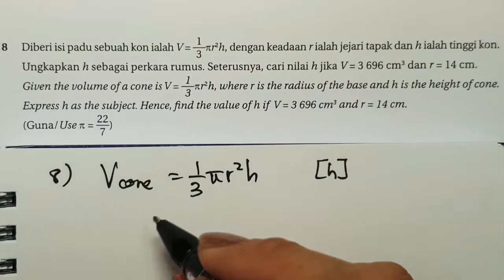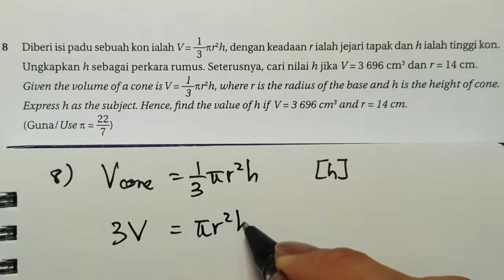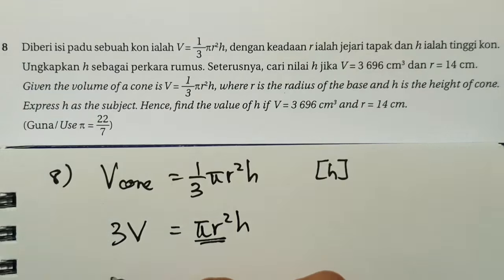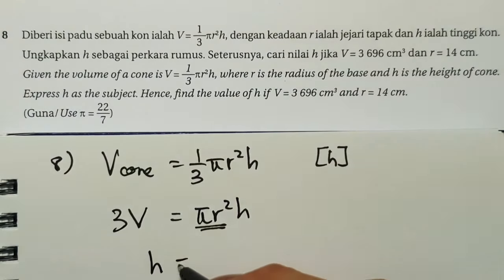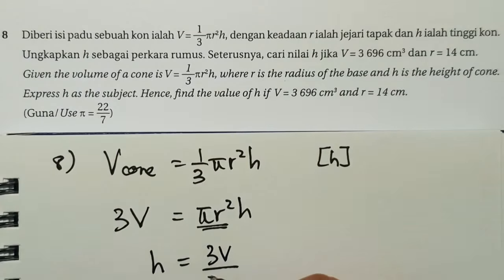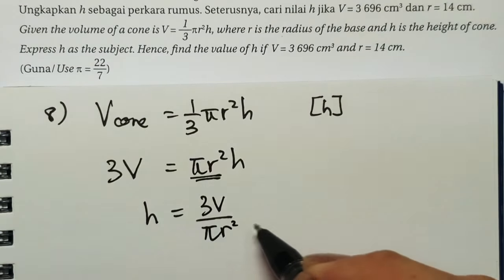So over here, we will have 3V equals to pi r squared h. So the pi r squared bring over to divide on both sides. h equals 3V over pi r squared. That's it.